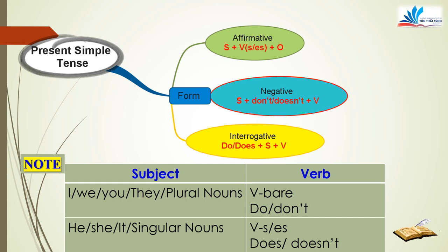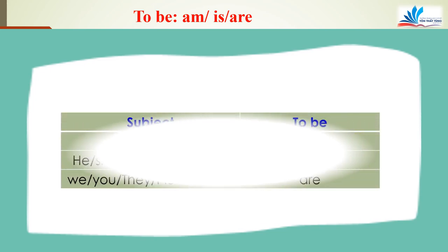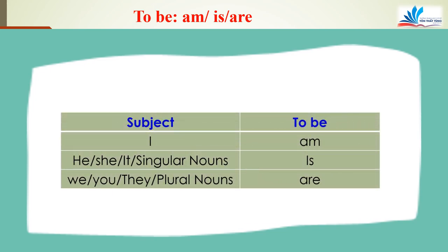Đối với động từ đặc biệt to be: with verb to be in the present simple, we have am, is, are. With subject I, we use am. The subject he, she, it, or singular noun, we use is. And the subject we, you, they, or plural noun, we use are.